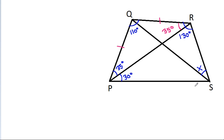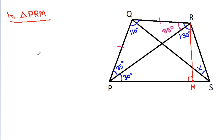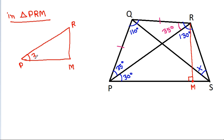Now, angle SPR is 30 degrees. If we draw a perpendicular from R on PS, and suppose this point is M, then in triangle PRM, angle SPR is 30 degrees, and this angle is 90 degrees, so this angle will be 60 degrees.